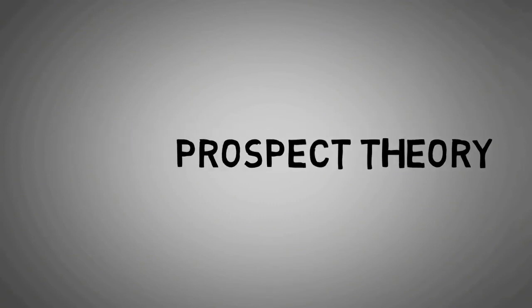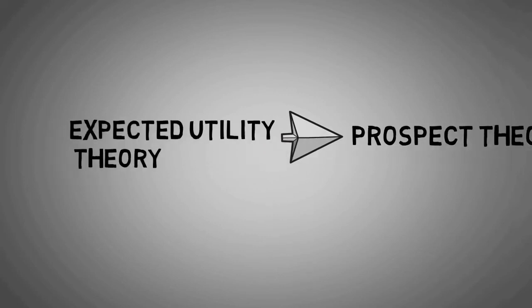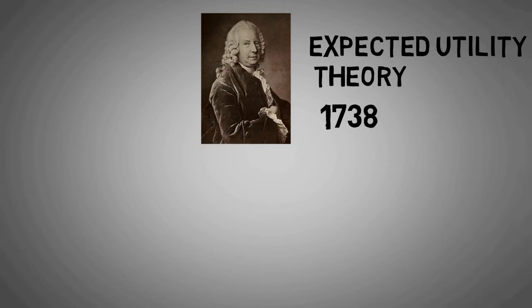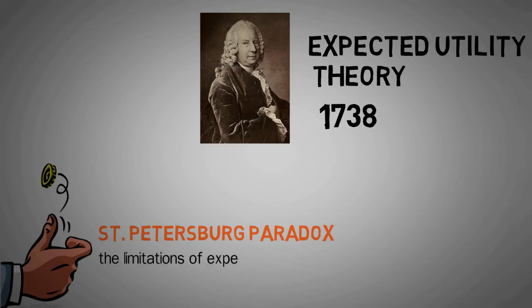Prospect theory - to start with, let's first discuss the predecessor of prospect theory, Expected Utility Theory. Bernoulli gave utility theory in 1738. He used a coin toss game known as Saint Petersburg Paradox to demonstrate the limitations of expected value as a normative decision rule.